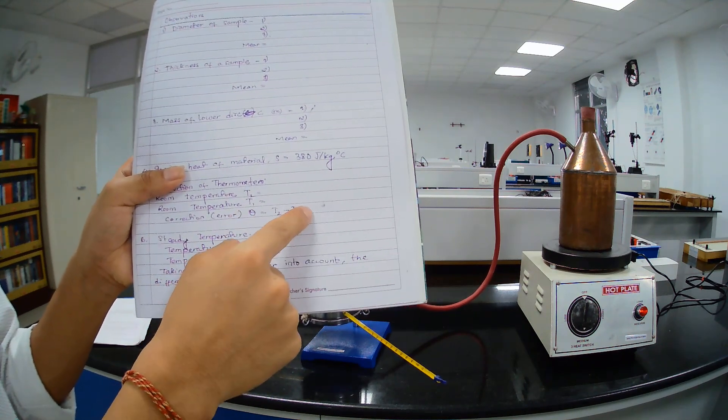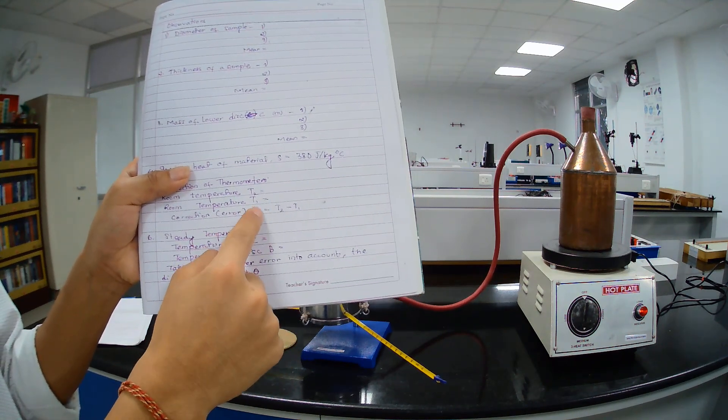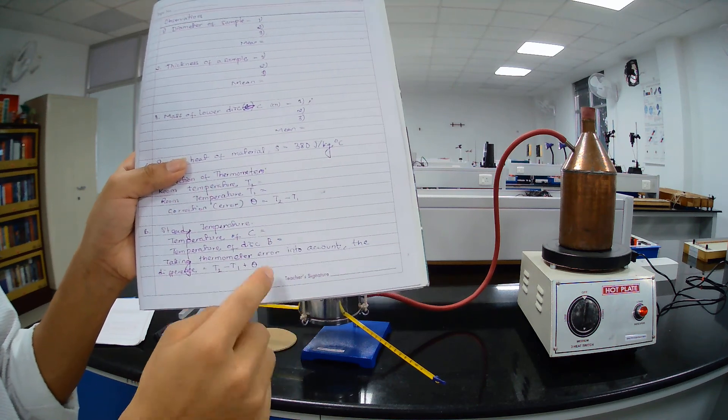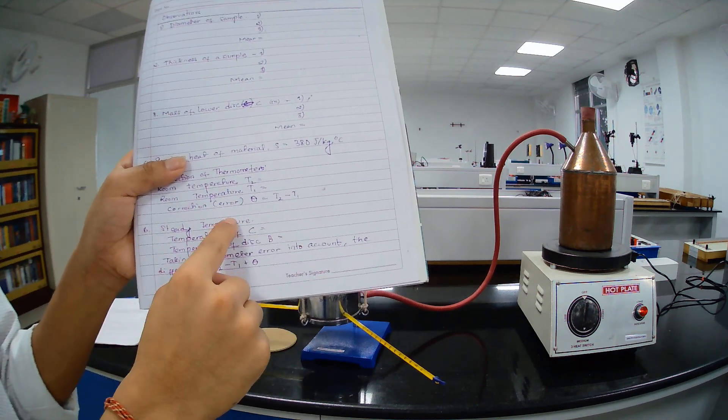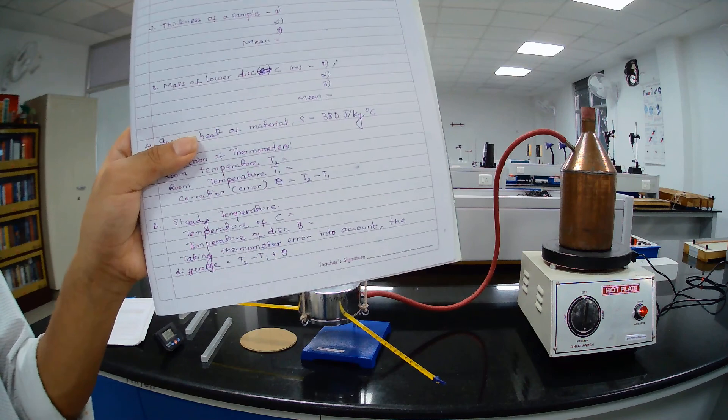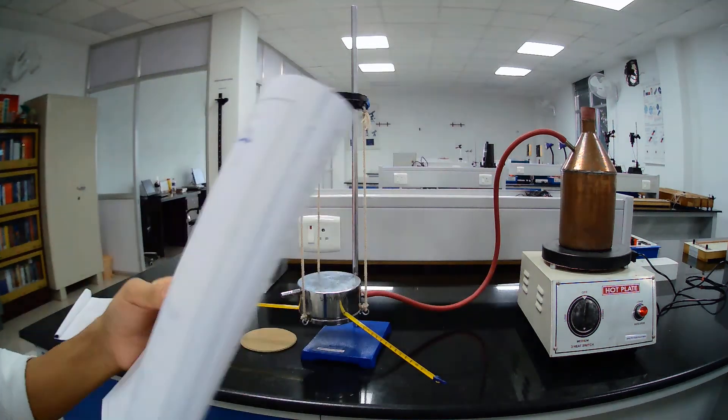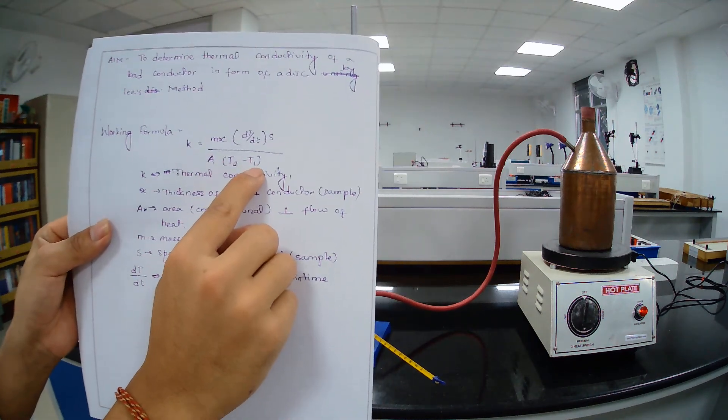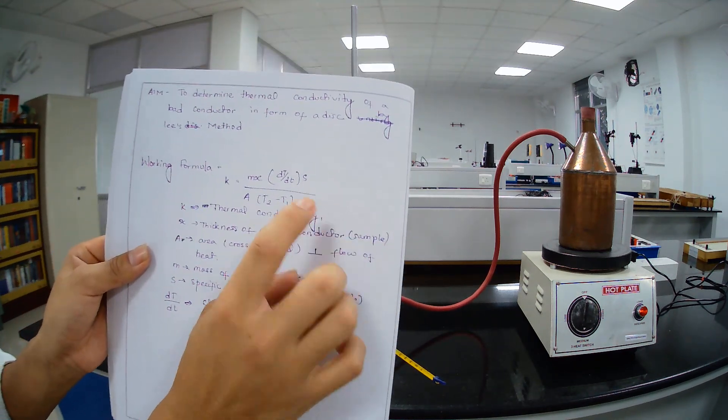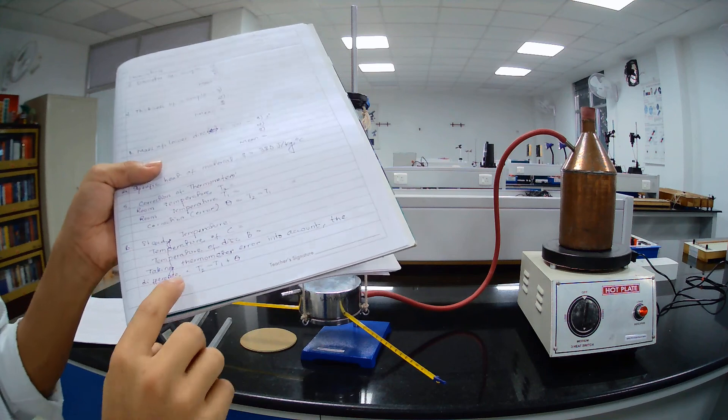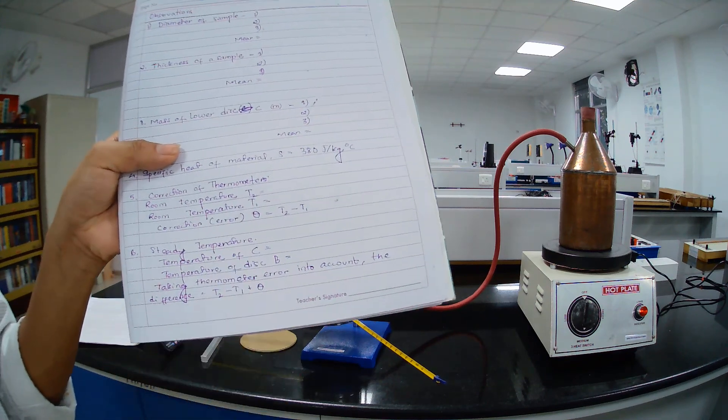This is when temperature was in room temperature and this is when temperature is in steady state. And here in working formula, this one is when temperature is in steady state.